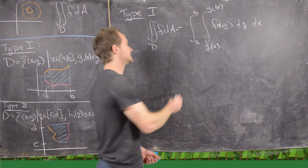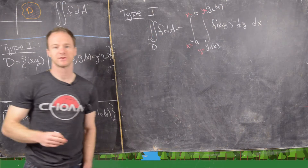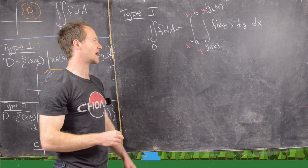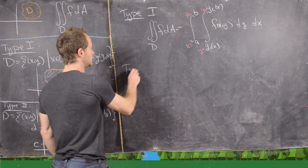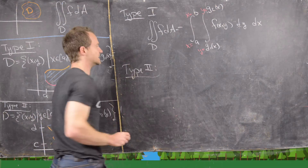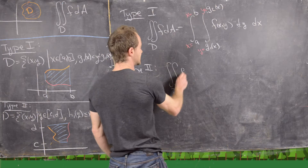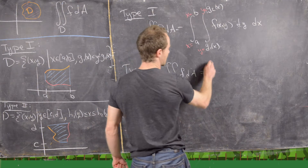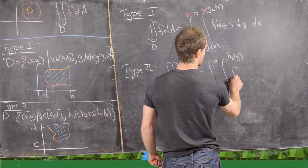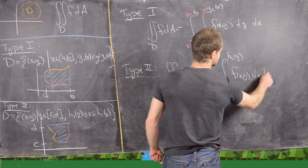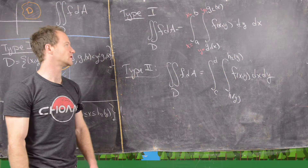Notice that the outer integral has numbers as bounds and the inner integral has functions as bounds. It's important to have only numbers on the outside integral because we want a number at the end. Type 2 integrals are essentially the same thing with everything reversed.